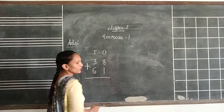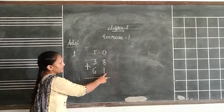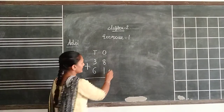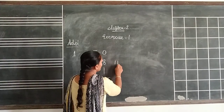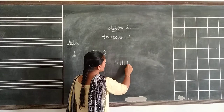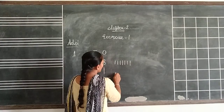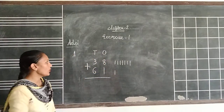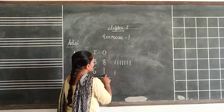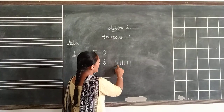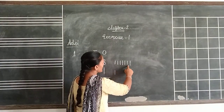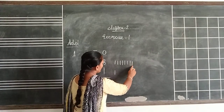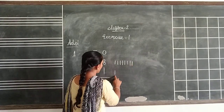8 plus 1. Suppose you have 8 things: 1, 2, 3, 4, 5, 6, 7, 8. Then you have 1 more thing. How many things do you have together? Counting: 1, 2, 3, 4, 5, 6, 7, 8, 9. So 8 plus 1 equals 9.